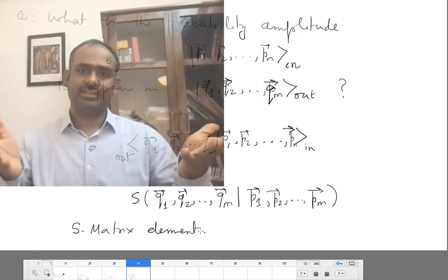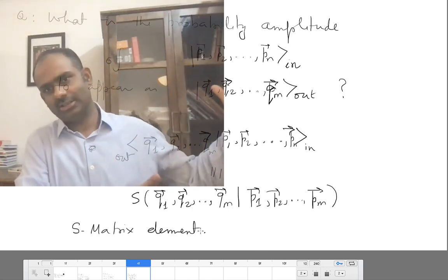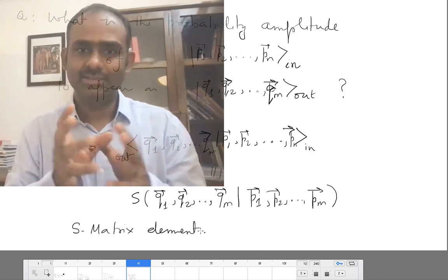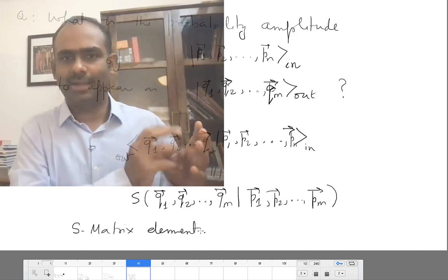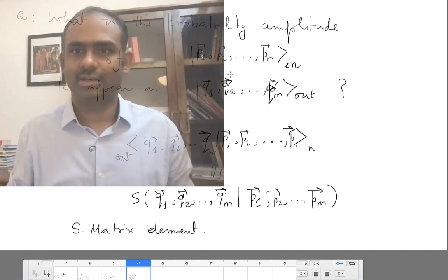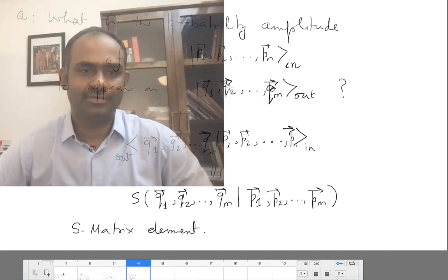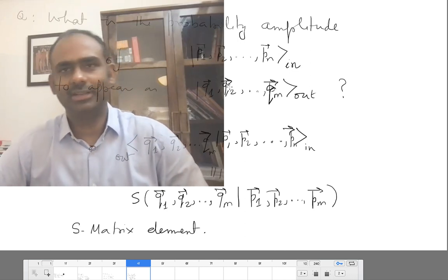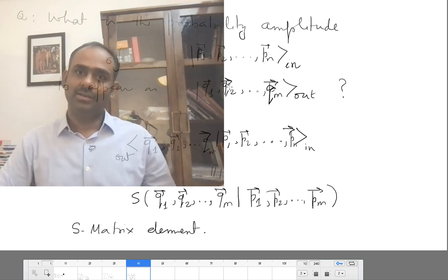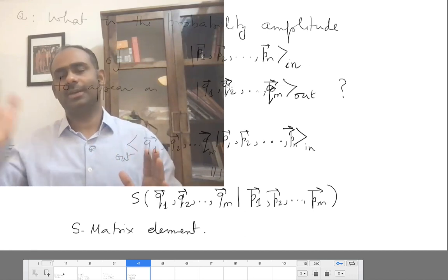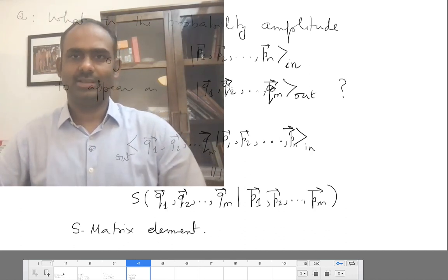Once you know this object, you can easily calculate the probability amplitude of an initial state appearing as a final state. Apart from these matrix elements, the other ingredient is just how you create wave packets — the functions that multiply these in and out basis states. The question is clear and this is what we are going to spend a lot of time with, trying to derive an expression for the S-matrix. After that, the next goal would be to find a formula for the cross section, so that you can come out with a prediction for experiments.